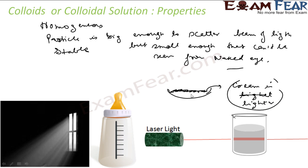Since cream is lighter, when the milk is boiled, vapors rise and the cream comes up and deposits on top. You can also use centrifugation to separate the cream from the milk. Typically, without any intervention, colloidal particles will not settle. Unlike suspension, where solid particles settle on their own, colloidal solutions are stable and require extra methods to separate.